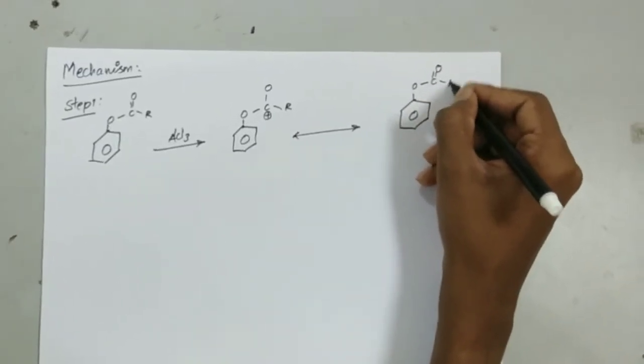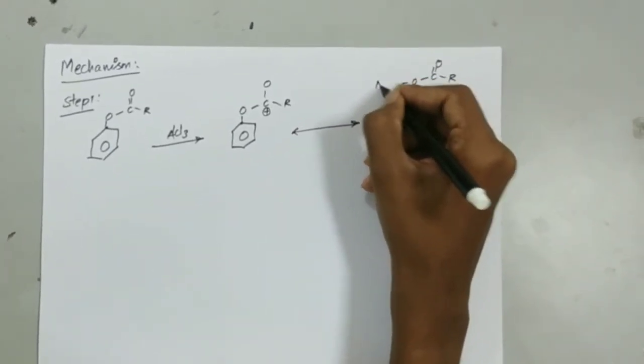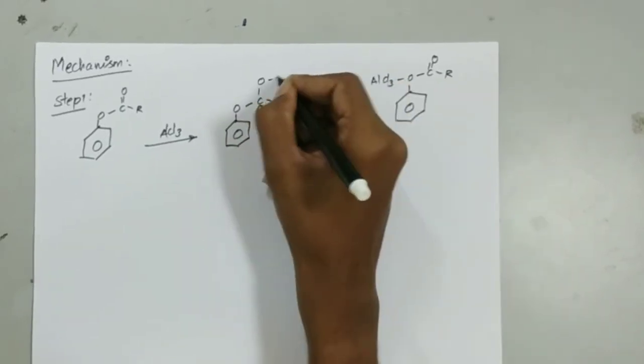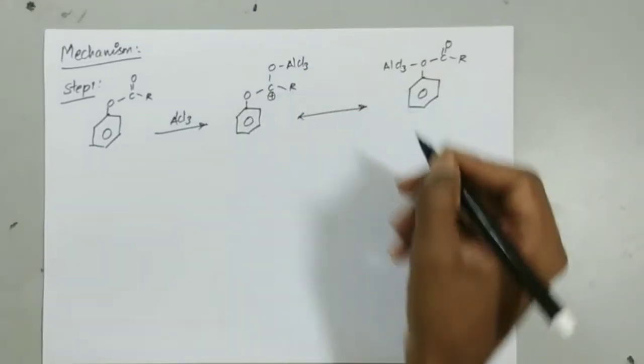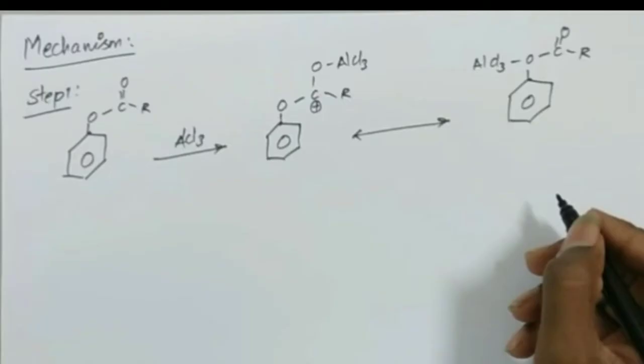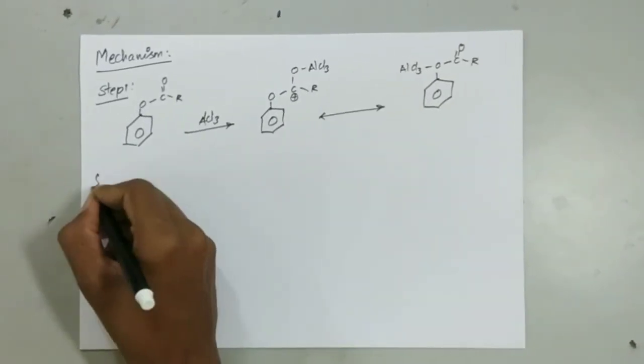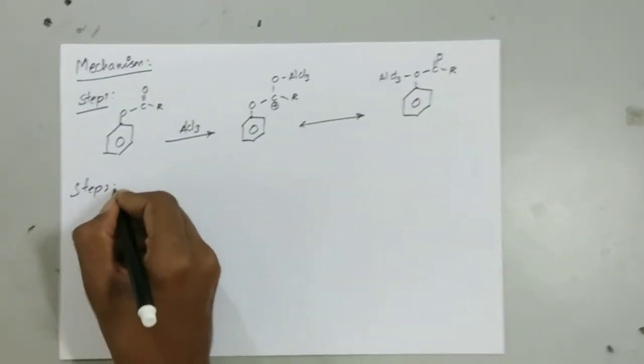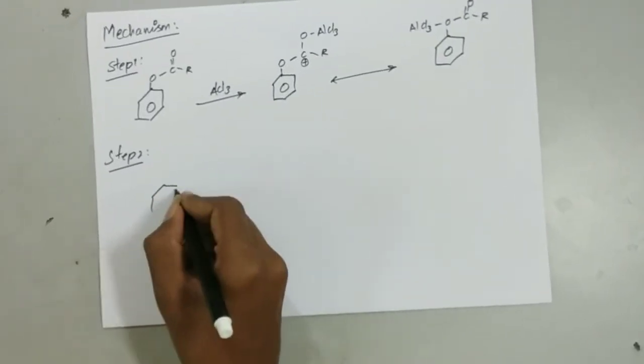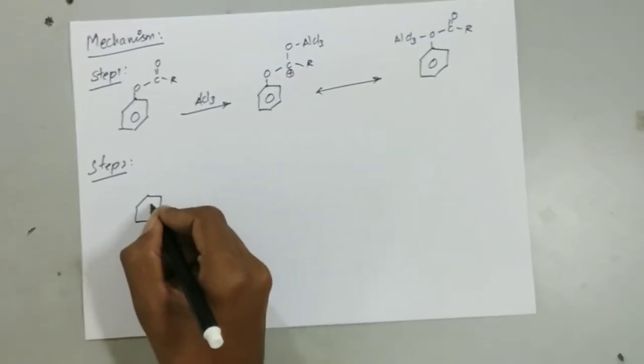In another possibility, the oxygen bonded to the benzene ring donates its lone pair of electrons and forms a bond with the Lewis Acid. Among both, the second possibility is more stable because the carbocation in the first possibility is not stable, and the resonance structure leads to the formation of the second possibility.